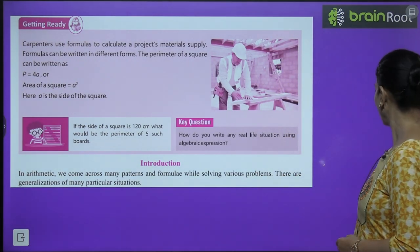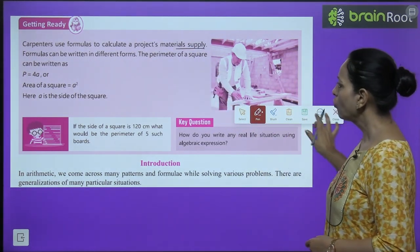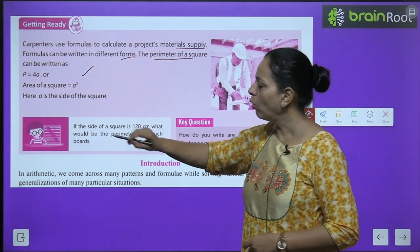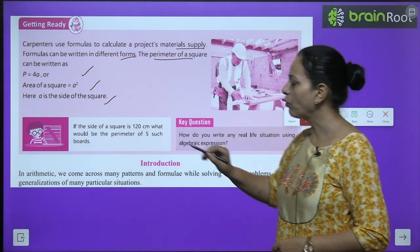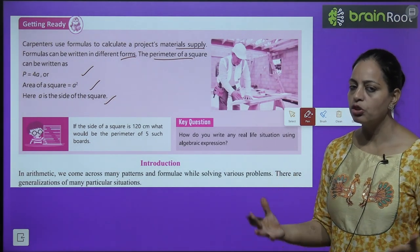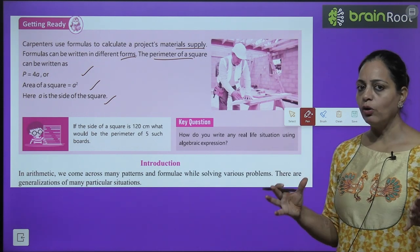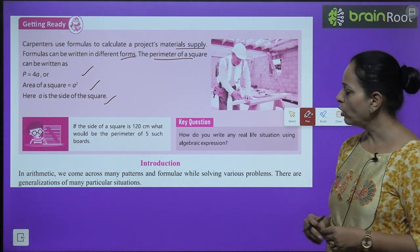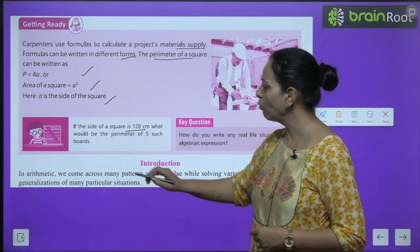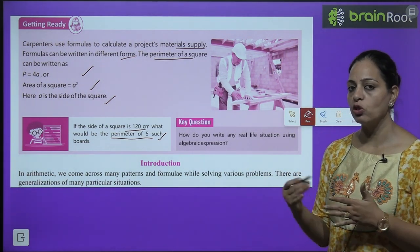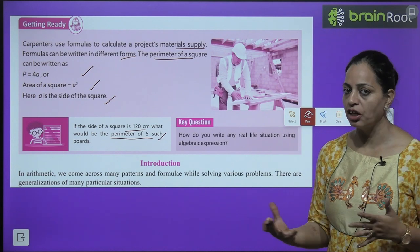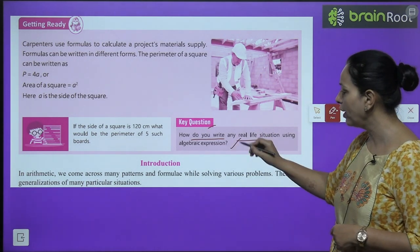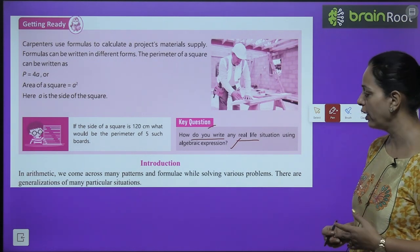Carpenters use formulas to calculate a project's material supply. Formulas can be written in different forms — the perimeter of a square can be written as P = 4a, or area of a square is a². If the side of a square is 120 cm, what would be the perimeter of 5 such boards? This brings us to the question: how do you write any real-life situation using an algebraic expression?